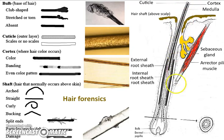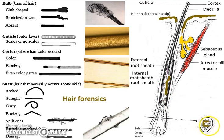The cortex is where the color is — the pigments are right here in the cortex. And finally, the medulla, which we don't see in thin hair. So if we find a hair fragment without a medulla, we think it's thin or perhaps from someone old.